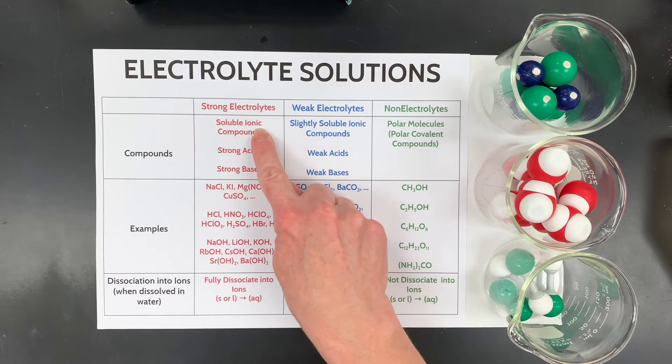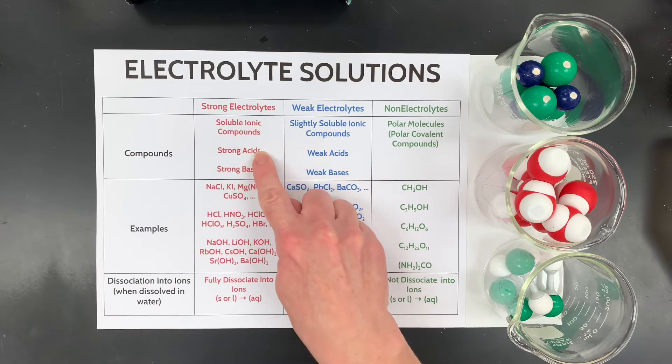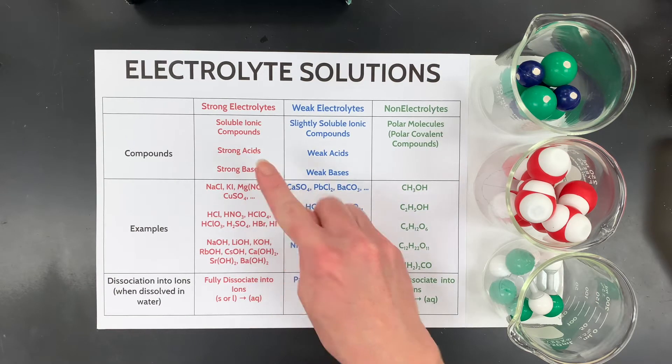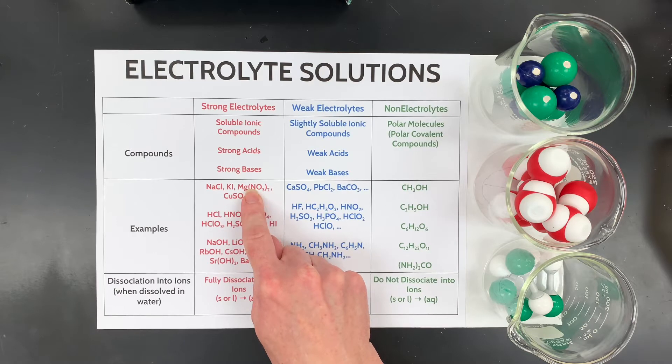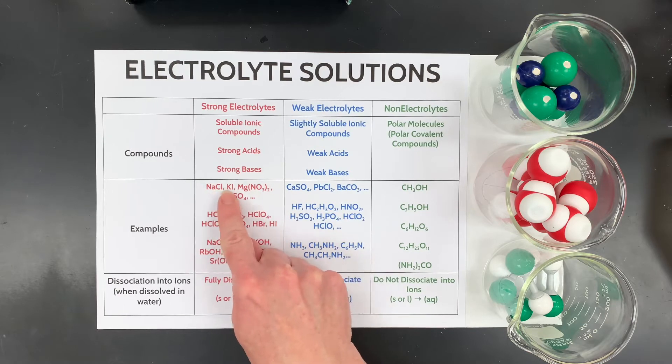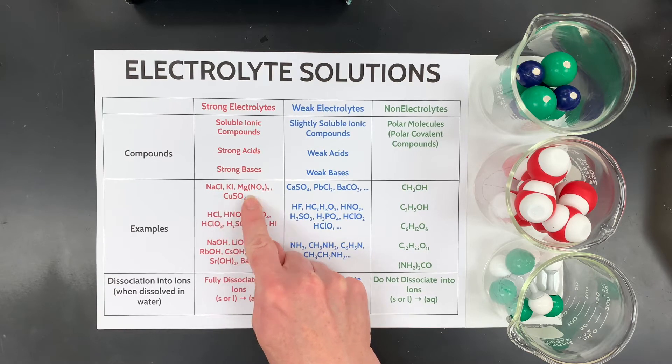All right, so strong electrolytes are soluble ionic compounds, strong acids, and strong bases. So this is just a really short list of some soluble ionic compounds: sodium chloride, potassium iodide, magnesium nitrate, copper 2 sulfate, and many more.